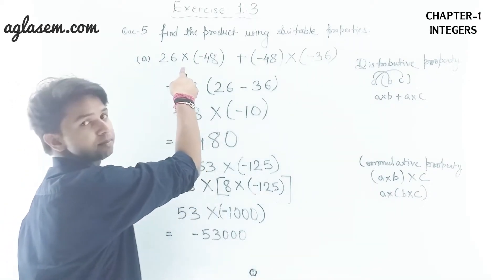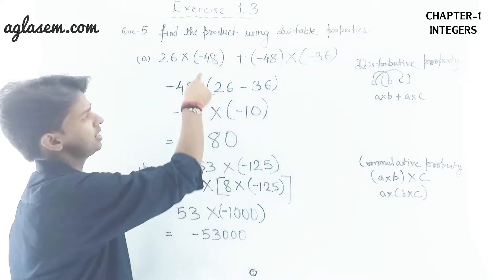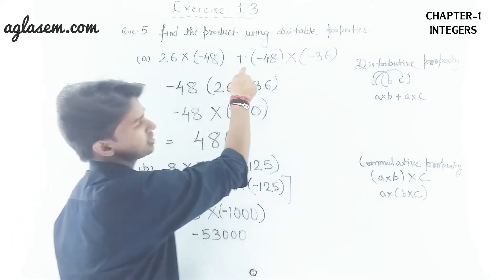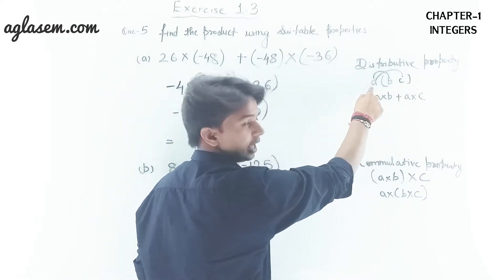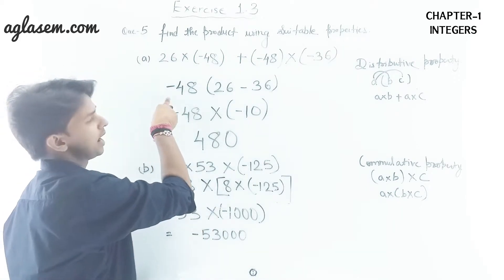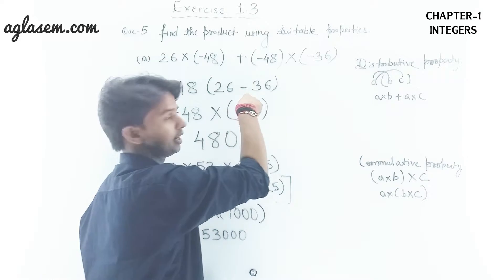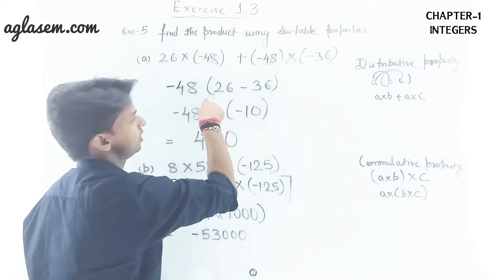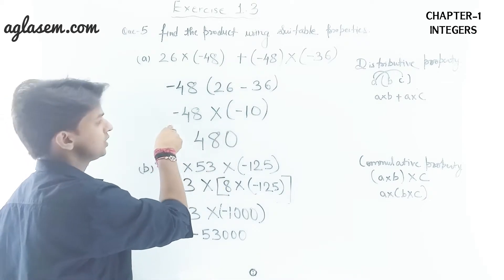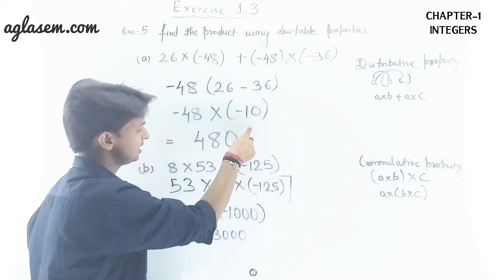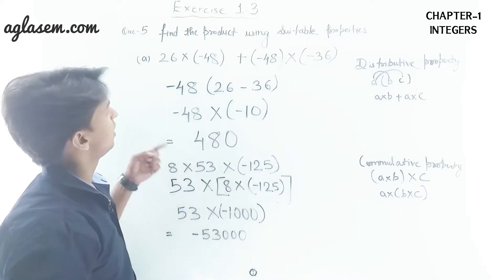Part a: 26 × (−48) + (−48) × (−36). Here −48 is common in both terms, so we use the distributive property: a×b + a×c. Taking −48 as common, we solve the bracket: 26 − 36 = −10. Then −48 × (−10) = 480 (positive, because minus × minus = plus). This is the answer for Part a.